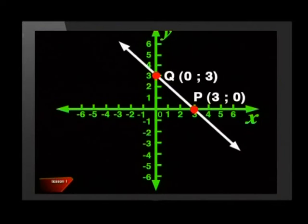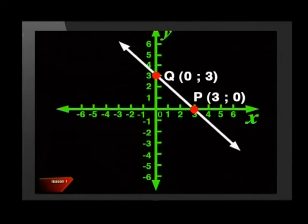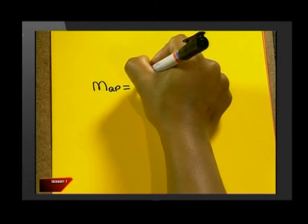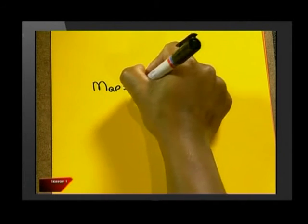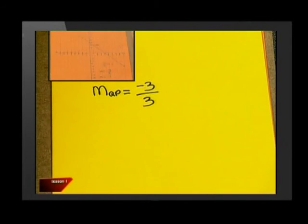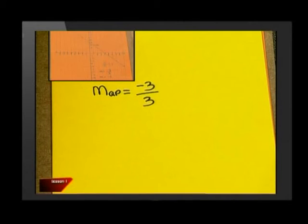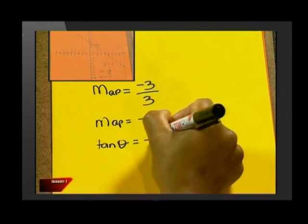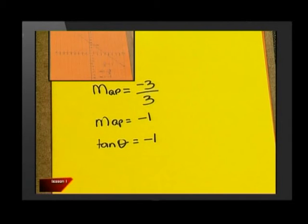Can we do another one? Sure. Here's a line that joins the points 0, 3 and 3, 0. Okay, the gradient of the line PQ is 3 down, so that's negative 3, and 3 across to the right, so that's a positive 3. So that comes to negative 1. Tan theta is negative 1. So now I can find theta.